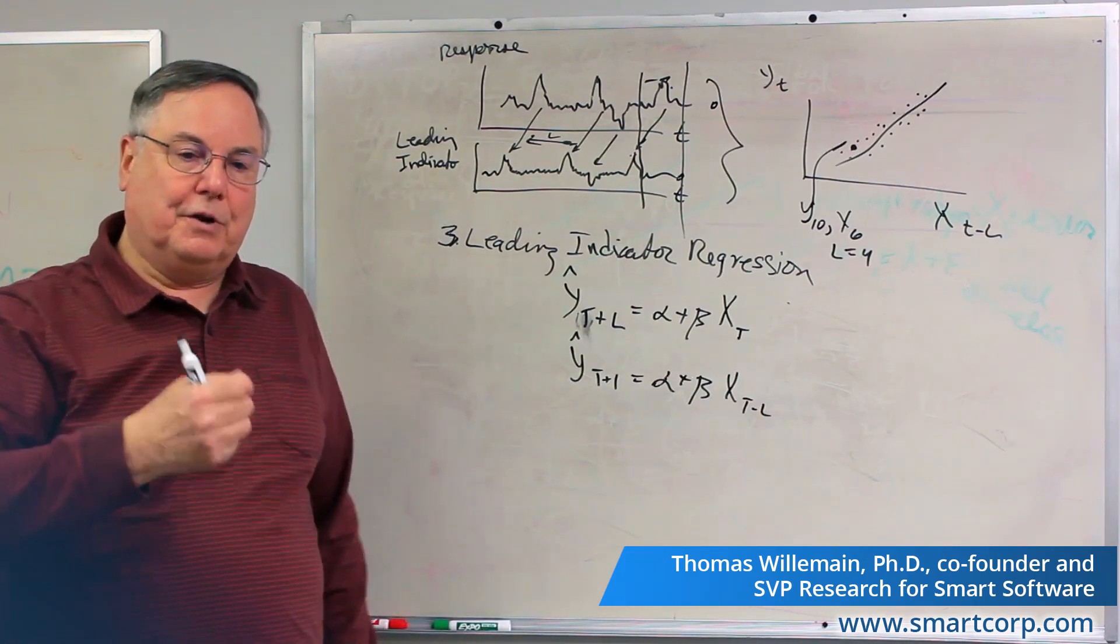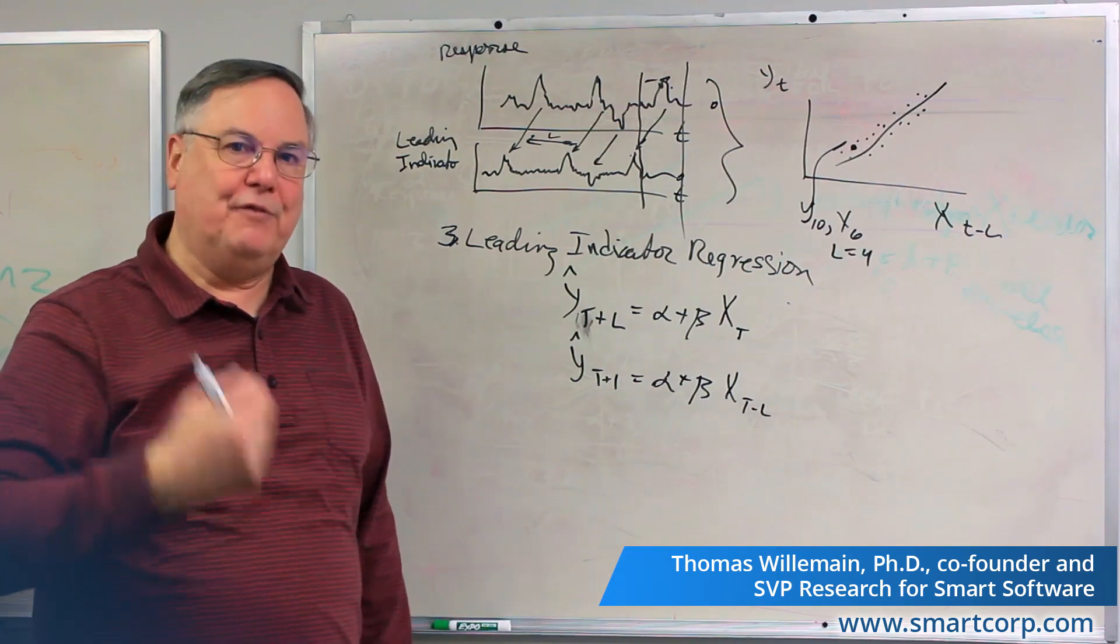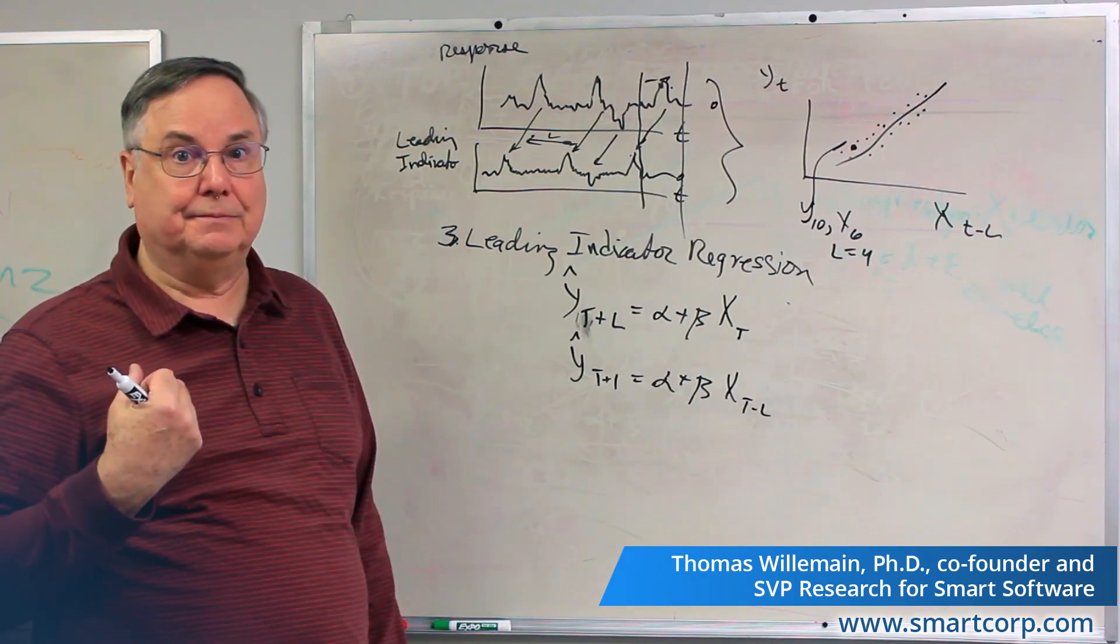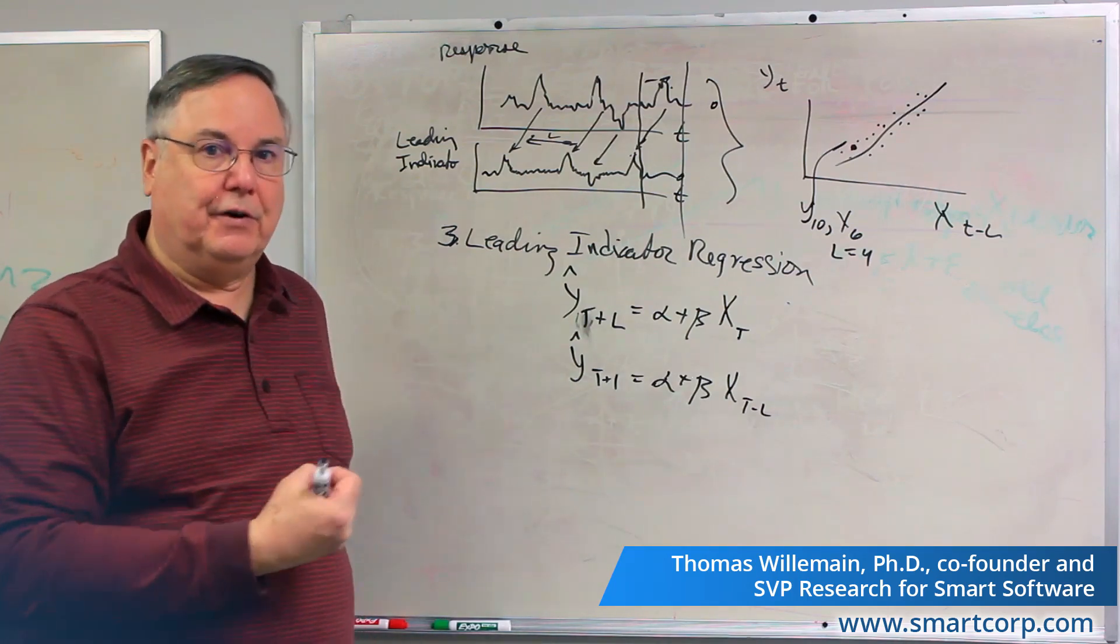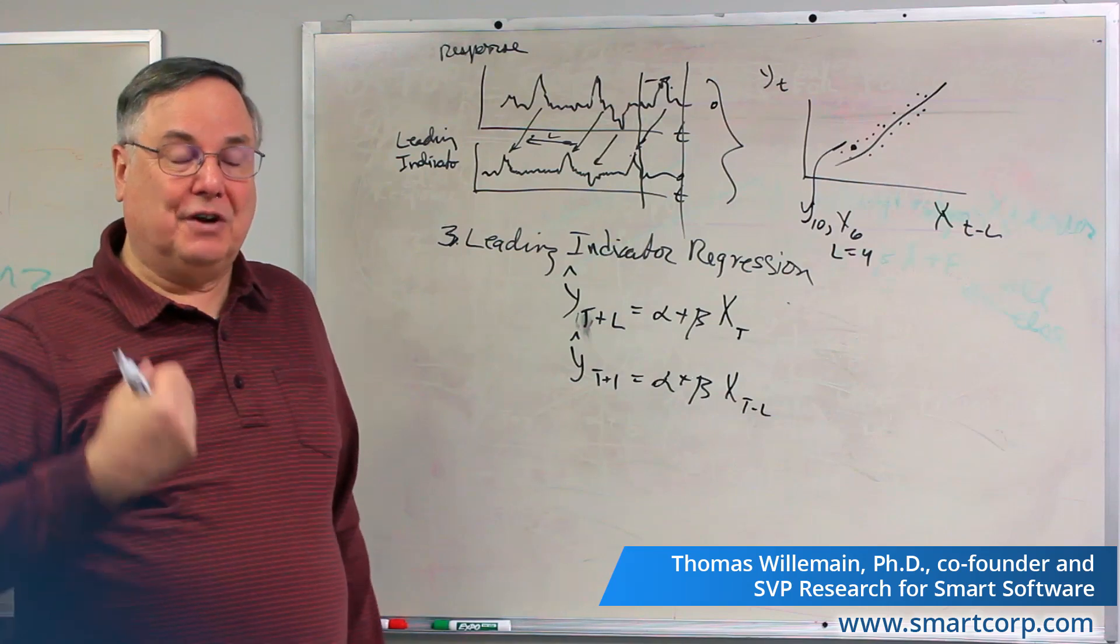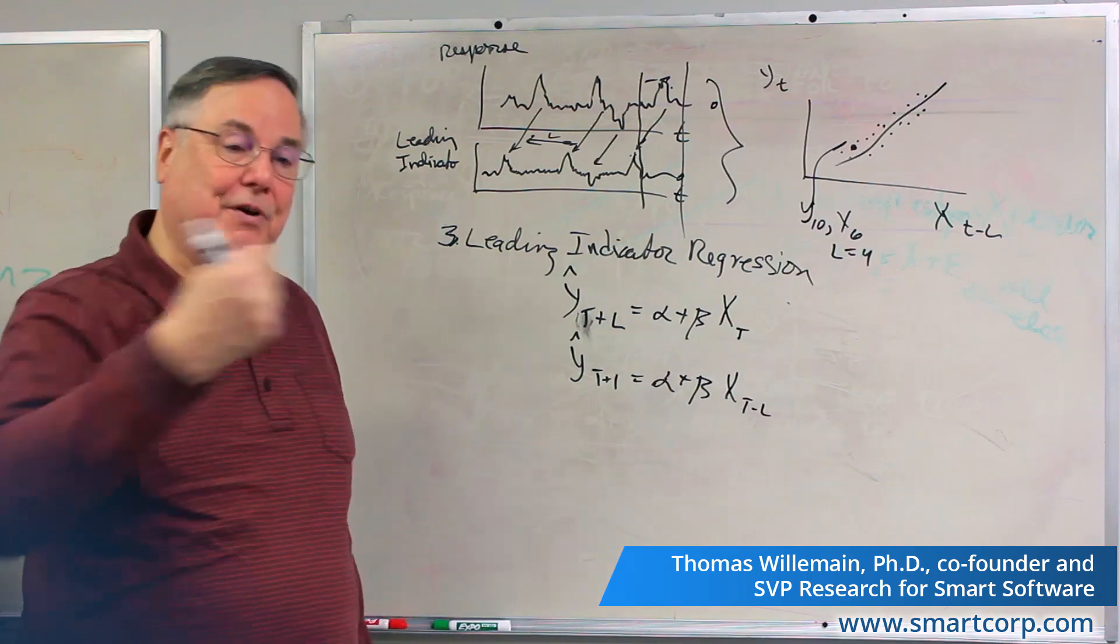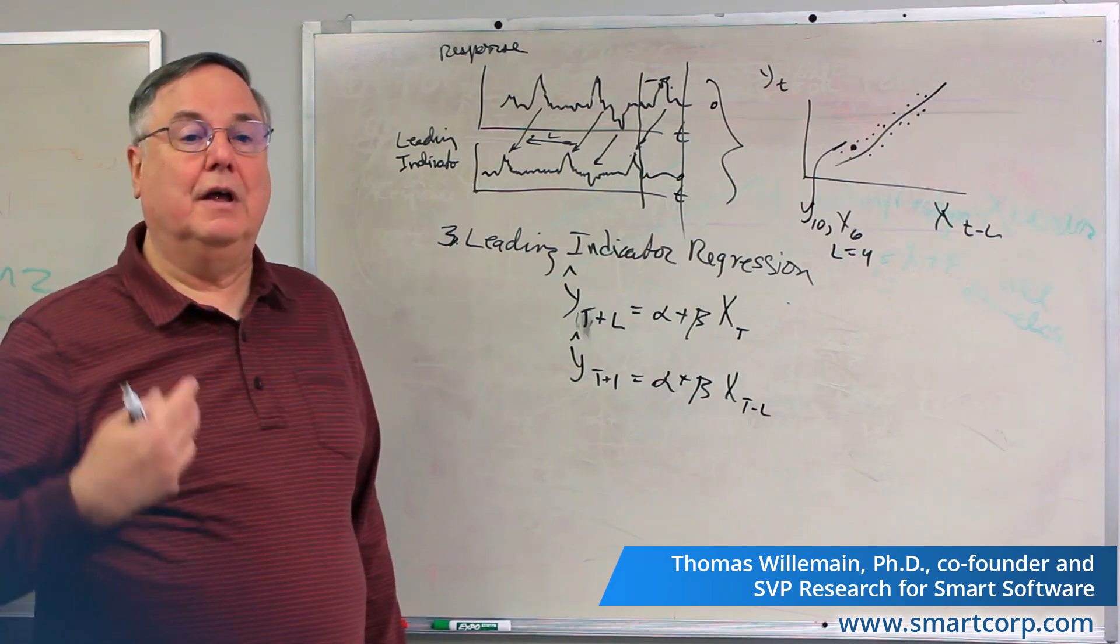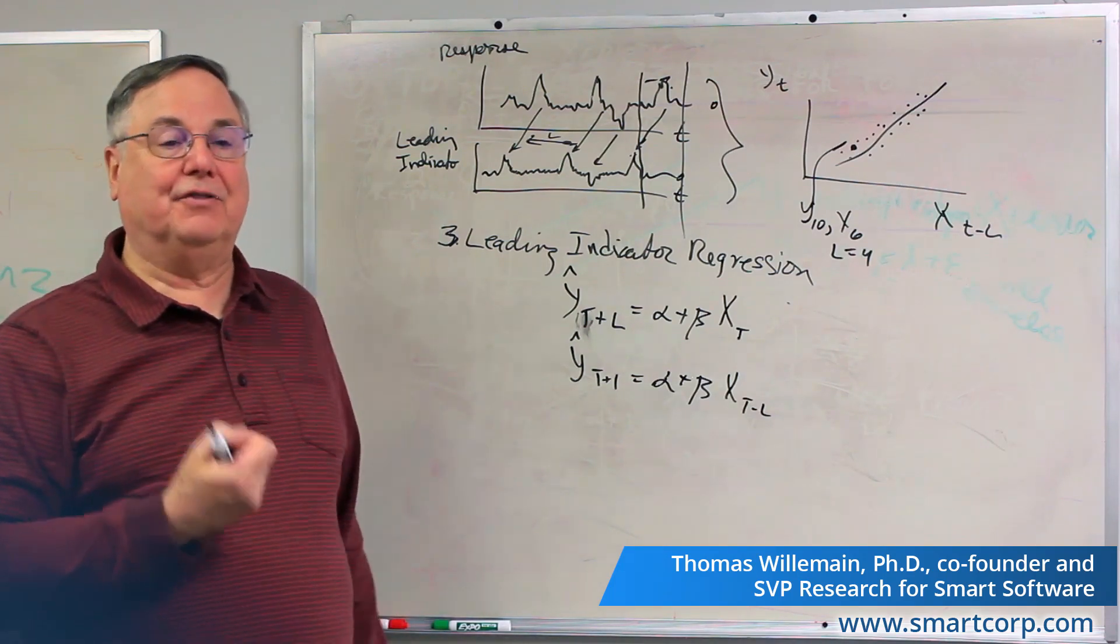So to summarize then, regression for forecasting starts by saying all those random bumps, the little zigs and zags, some of that may be predictable if you have more information. And the more information might either be old values of the thing you're trying to predict, that's autoregression, or it could be another variable which causes the predicted variable to change, but you have to forecast that other variable too. That's causal modeling. Or you found a leading indicator, which is a causal driver, but you don't have to forecast it because you can look back into the known record to get the values for X to plug into the regression equation. That's leading indicator forecast. So all of those are ways that we can use other information beyond the time series approach to possibly make more accurate forecasts.